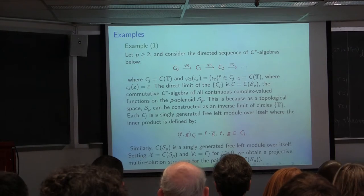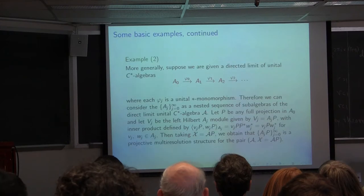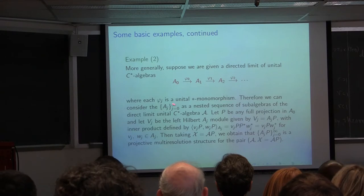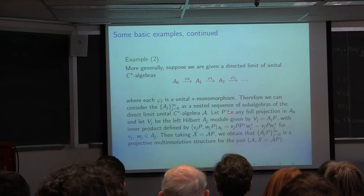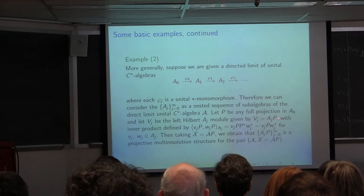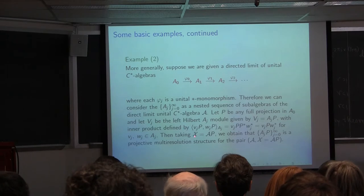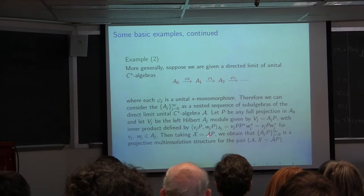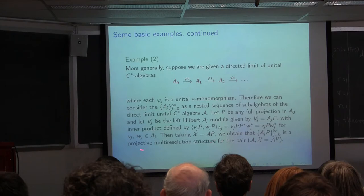At each stage you have continuous functions on the circle — you go further along and allow more information — but each C_j is isomorphic to continuous functions on the circle. This gives a projective multi-resolution structure. More generally, if you have a direct limit of unital C*-algebras and any full projection p in A₀, and you let V_j be the Hilbert A_j module A_j · p, then taking the large module C to be the direct limit C*-algebra A · p, you get that the sequence A_j · p gives a projective multi-resolution structure for this pair.